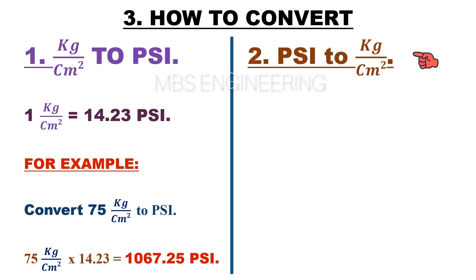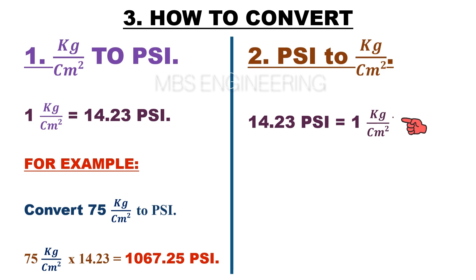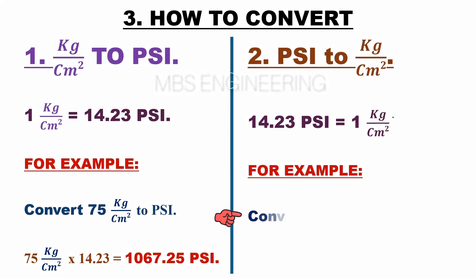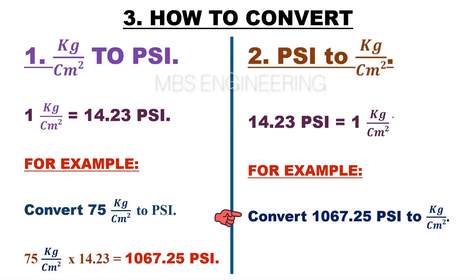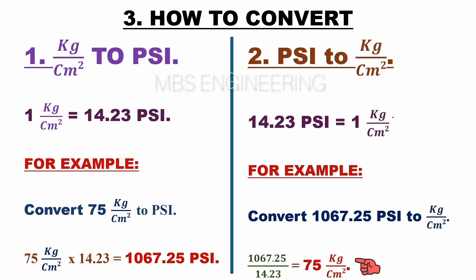Next, we will learn how to convert PSI to kilogram per centimeter square. Please remember that 14.23 PSI is equal to 1 kilogram per centimeter square. Sample example: convert 1067.25 PSI to kilogram per centimeter square. 1067.25 PSI divided by 14.23 — therefore the obtained pressure value is 75 kilograms per centimeter square.